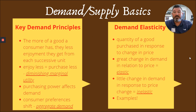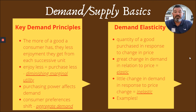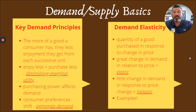If we look at demand principles versus demand elasticity, we get to some basic economics terms. It has a lot to do with diminished marginal utility and aggregate demand versus demand elasticity. A great change in demand in relation to price makes it elastic. A little change in demand in response to price makes it inelastic. We'll talk through more examples in class and start to practice some of our activities, but I wanted to reintroduce some of those ag economics terms you may have learned in ag econ class.